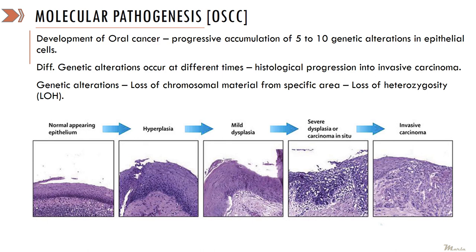The pathogenesis of oral squamous cell carcinoma can be further explained by the following events. Development of oral squamous cell carcinoma is not just a single genetic mutation — it is basically a progressive accumulation of a number of genetic alterations within the oral epithelial cells. These genetic alterations occur at different times, leading to a gradual progression of the cells into invasive carcinoma. The image shown illustrates the gradual progression from normal appearing epithelium to hyperplasia, then mild dysplasia, then severe dysplasia or carcinoma in situ, and finally full invasive carcinoma.